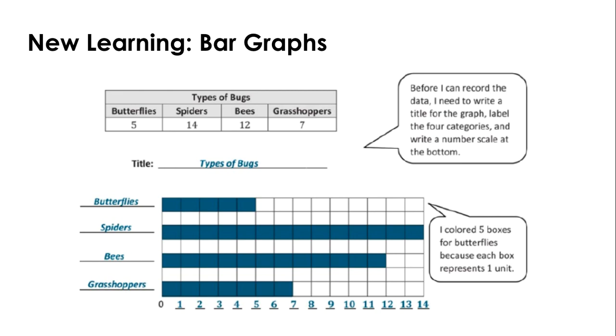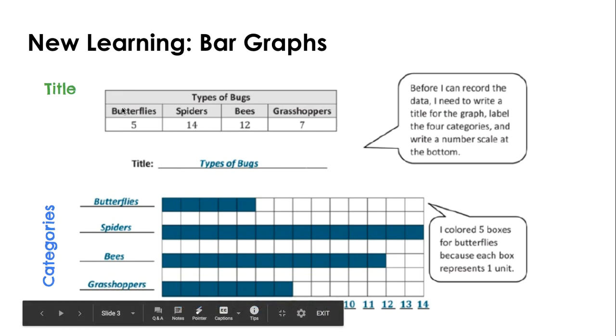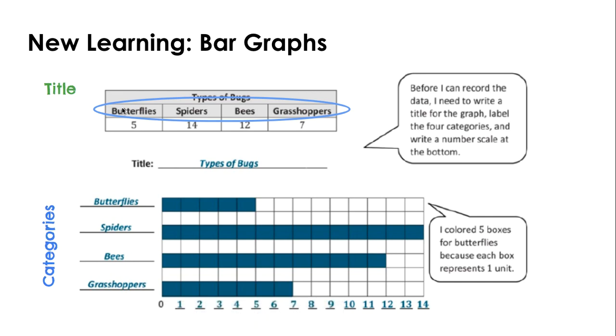As you can see, we are dealing with types of bugs. So the first thing I want to point out is the title, types of bugs in our table. And you'll notice it in one more place below in our bar graph, types of bugs. The title is the same for both table and bar graph. The next word I want you to pay attention to is categories. We know the categories in the table are butterflies, spiders, bees, and grasshoppers.